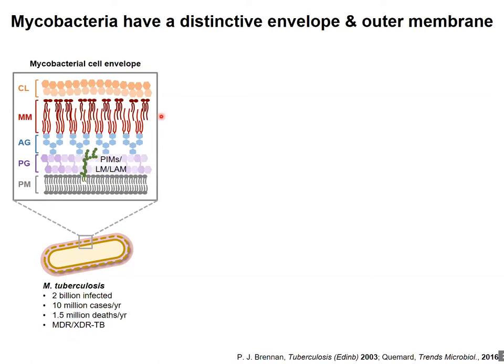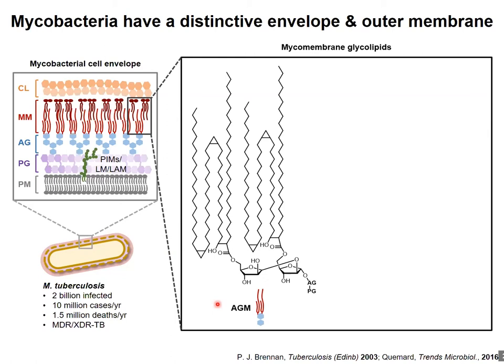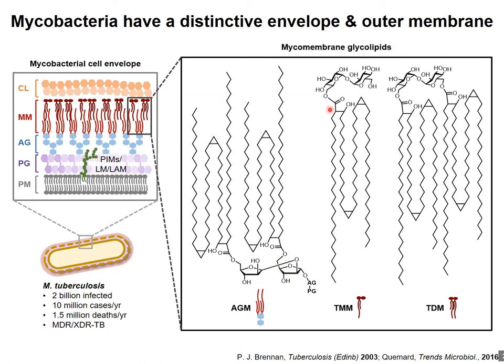Many research efforts focus on the mycobacterial cell envelope, which is very different from gram-negative or gram-positive envelopes. Mycobacteria have a thick and hydrophobic outer membrane called the mycomembrane — a glycolipid-rich layer whose inner leaflet consists of arabinogalactan mycolates. These are composed of long-chain branched fatty acids called mycolic acids esterified to underlying arabinogalactan polysaccharides. Other lipids and glycolipids are non-covalently associated with that membrane, including the abundant trehalose glycolipids — trehalose mono- and dimycolate — which have mycolic acids esterified to one or both six-positions of the disaccharide trehalose.